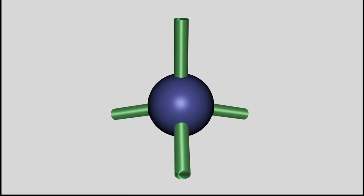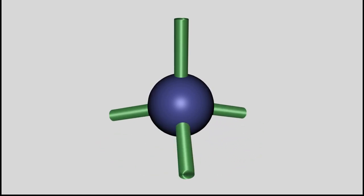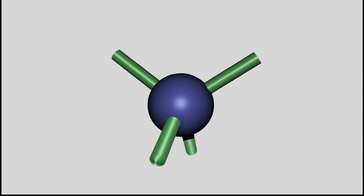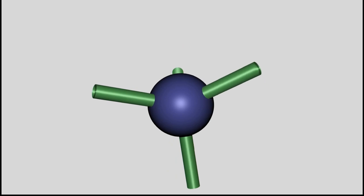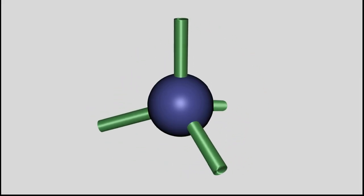This angle is also called tetrahedral angle, because it is the angle between the segments joining the center and the vertices of a tetrahedron, which is a body having four corners.